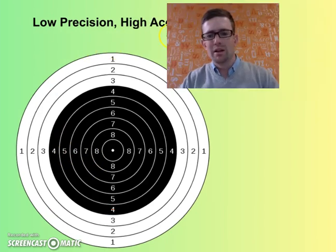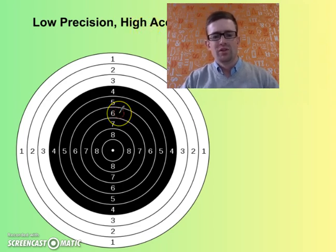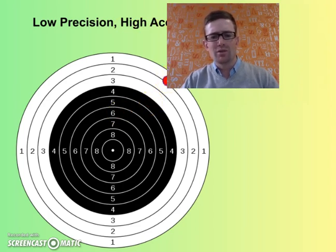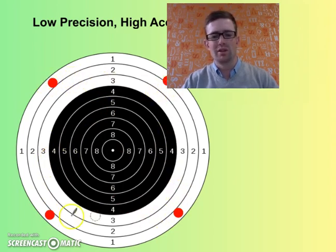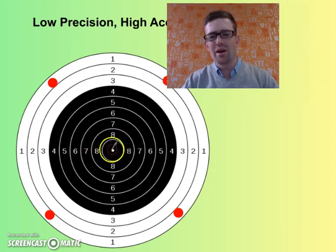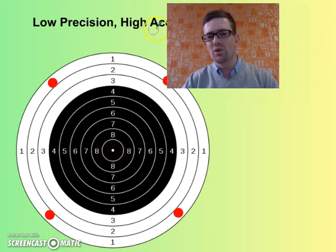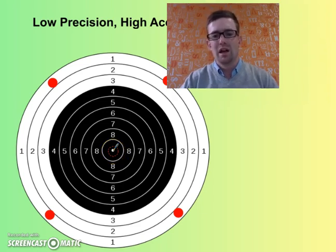In this example, we're looking at low precision and high accuracy. To have low precision and high accuracy, we might have four results scattered all over the target — so low precision. But if you think about where the average result for those four points would be, it would be right in the middle, right on the true value, which is of course high accuracy. So you can have a situation where you have low precision and high accuracy.